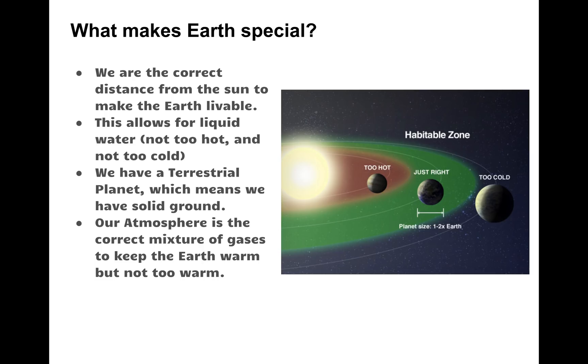Now, we also have what we call a terrestrial planet. That means we have a solid ground to walk around on. If we were on Neptune or Jupiter, those planets are made of just gases and we could not live on them, plant plants, have animals, or build a house because it would just sink into the middle of the planet.